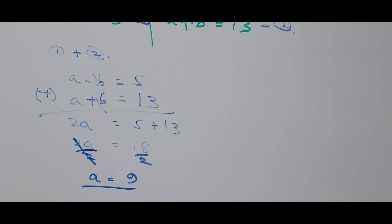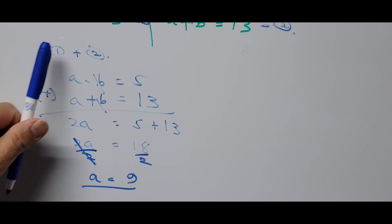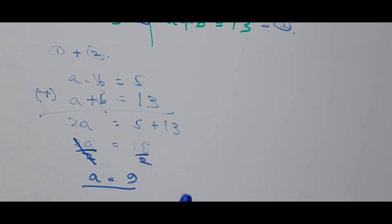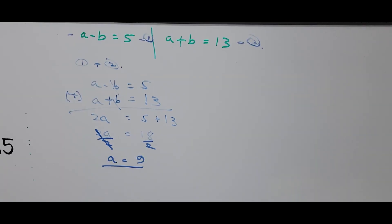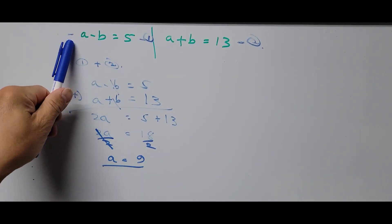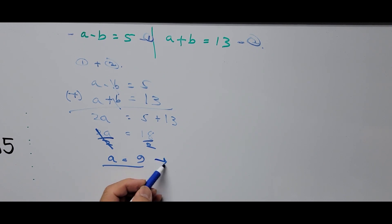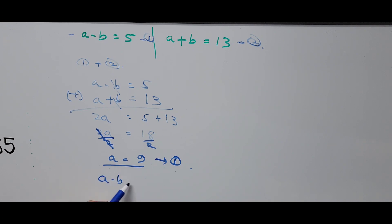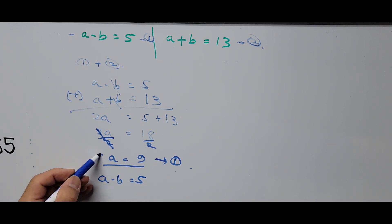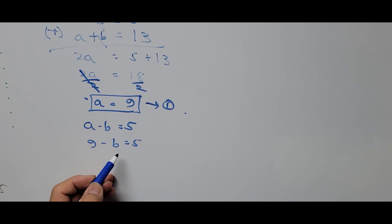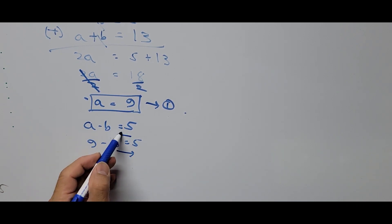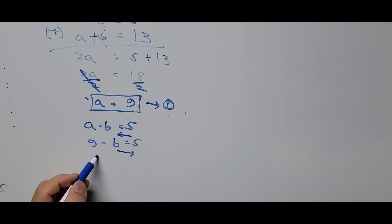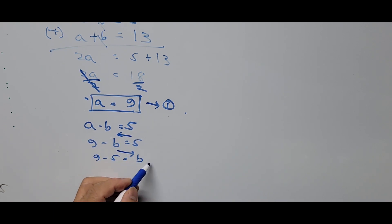We get a equals 9. Now substitute a equals 9 into equation 1: 9 minus b equals 5. Transposing, we get 9 minus 5 equals b, so b equals 4.